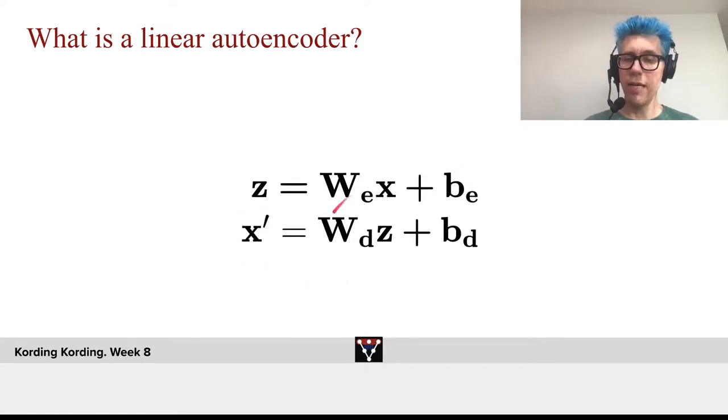Then the reconstruction is again a linear function of Z. We multiply W_d, the decoding weights, with Z and add the decoding biases.